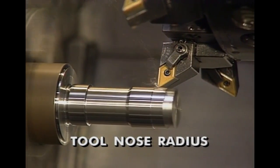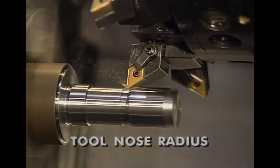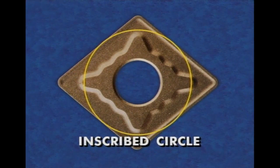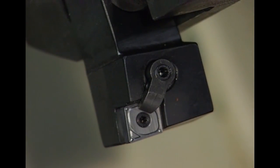The tool nose radius helps determine insert strength as well as workpiece surface finish. Insert size is designated by its inscribed circle and the inscribed circle size of the insert must match the pocket size of the tool holder.